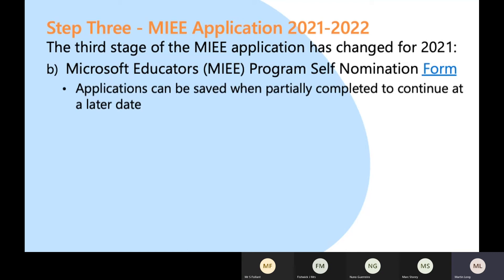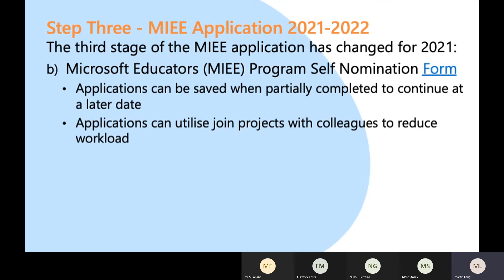When you start your application you'll need to create an online account — that is your area to make your application. Applications can be used by joint projects: if you've delivered something in partnership with a colleague or another school or organization, it's absolutely fine for both of you to use it as evidence for your individual MIEE applications. Microsoft are going to be pleased to see that you've worked with a colleague and collaborated together.